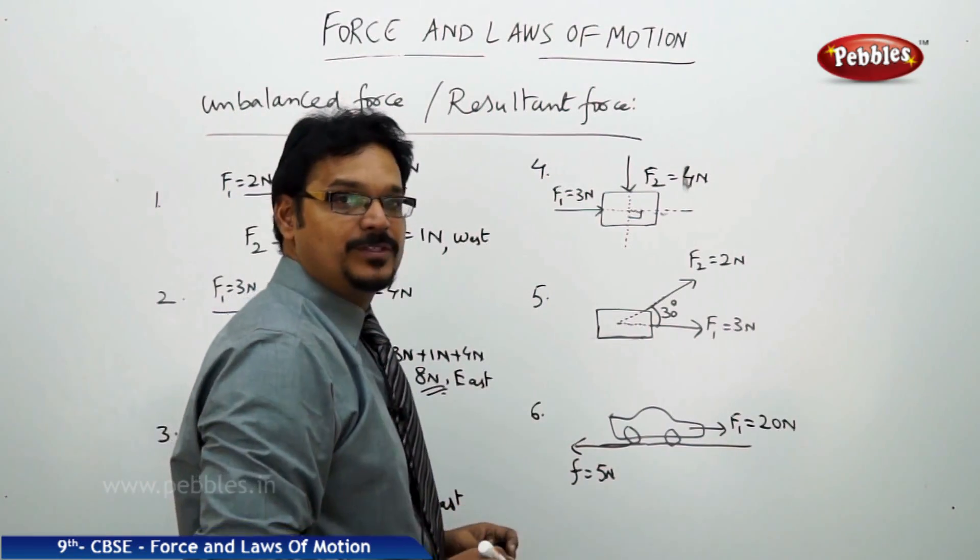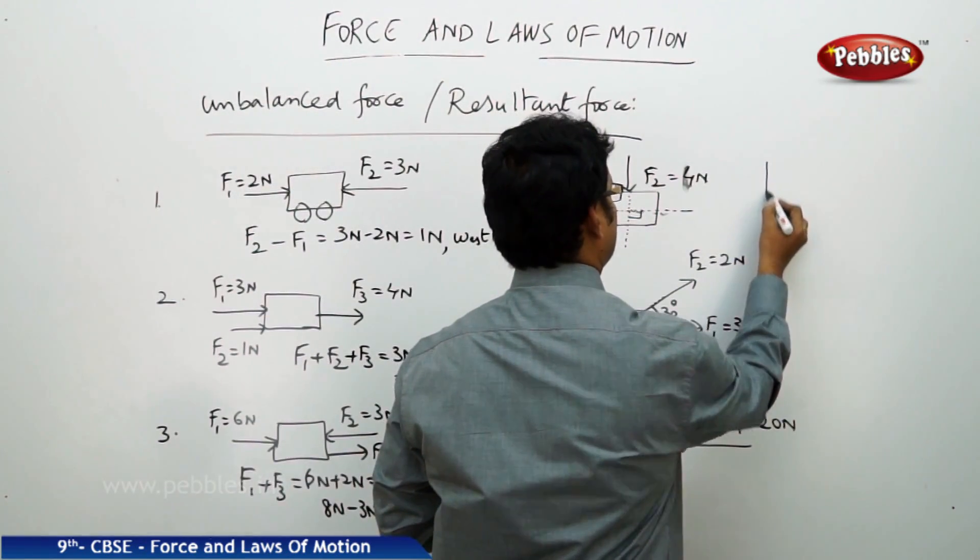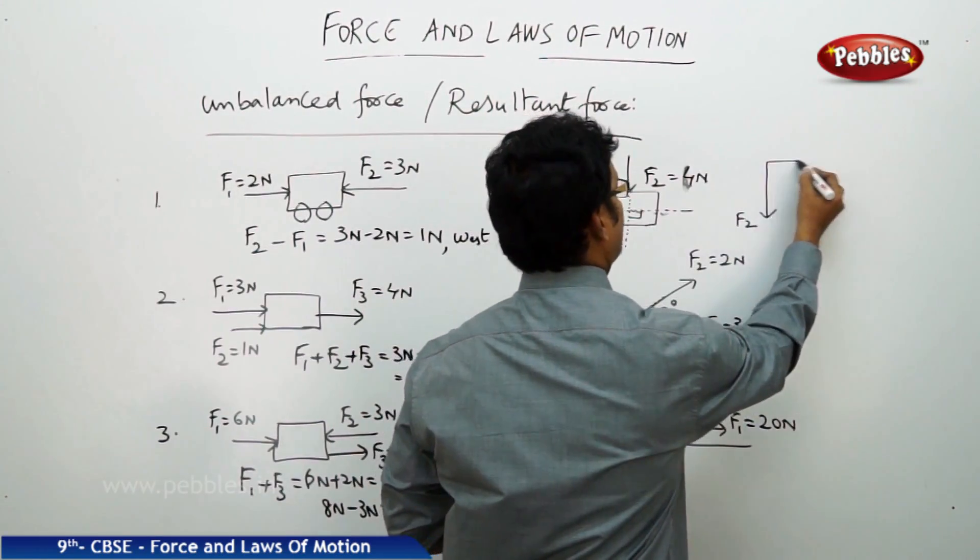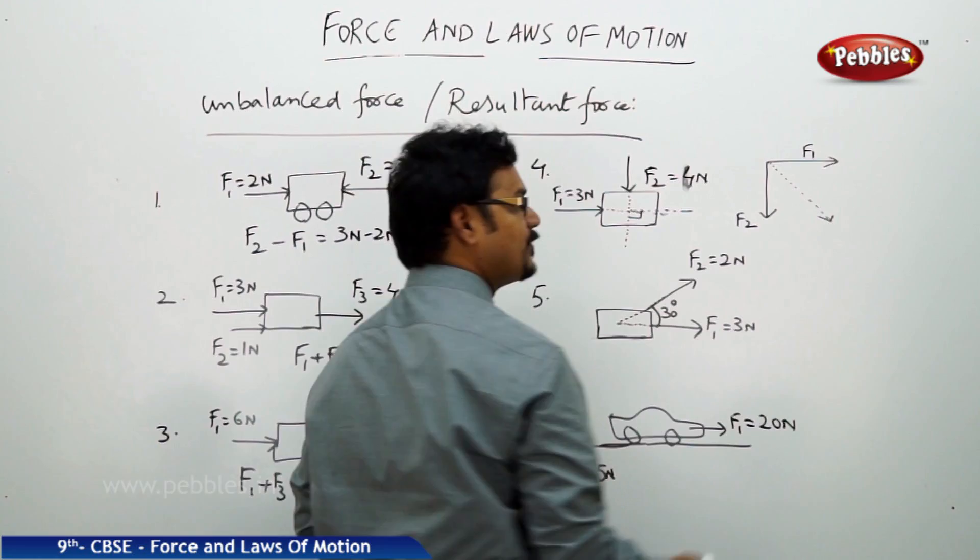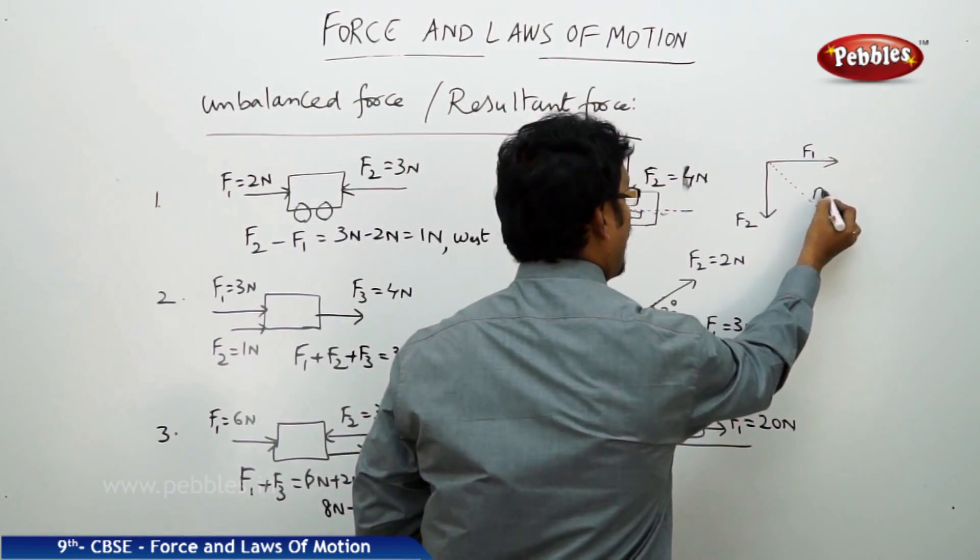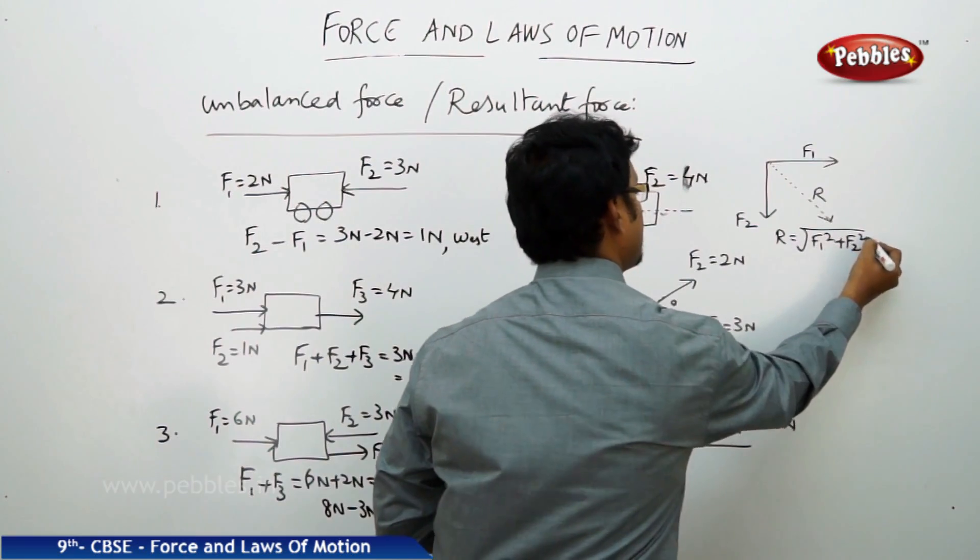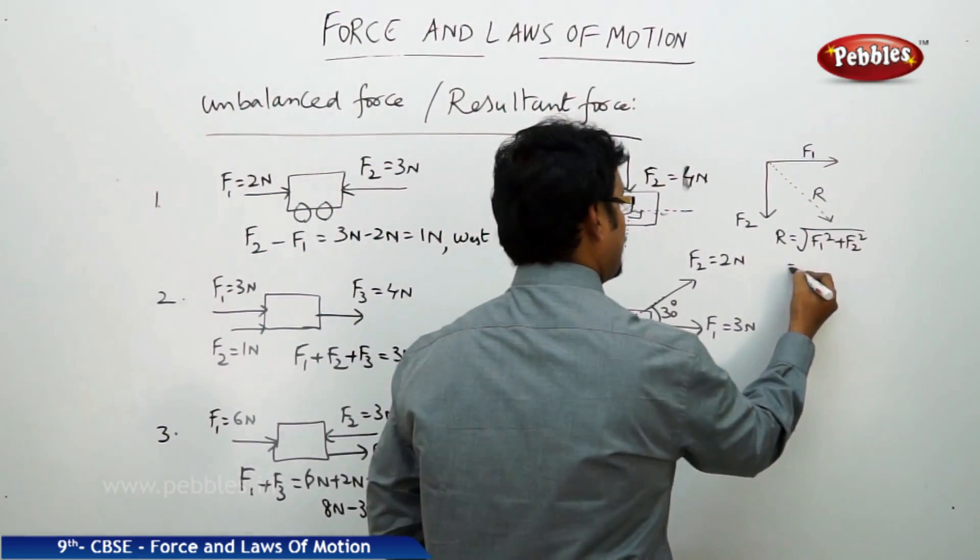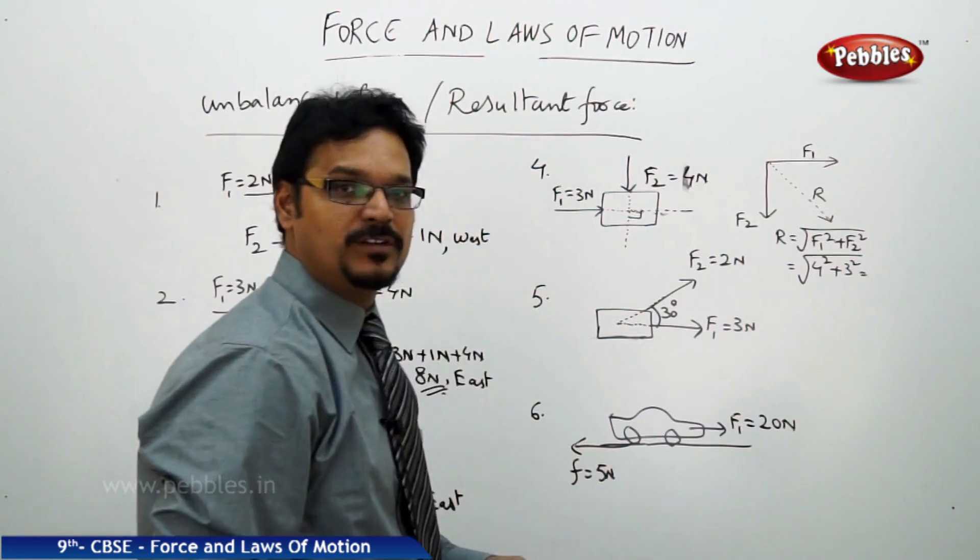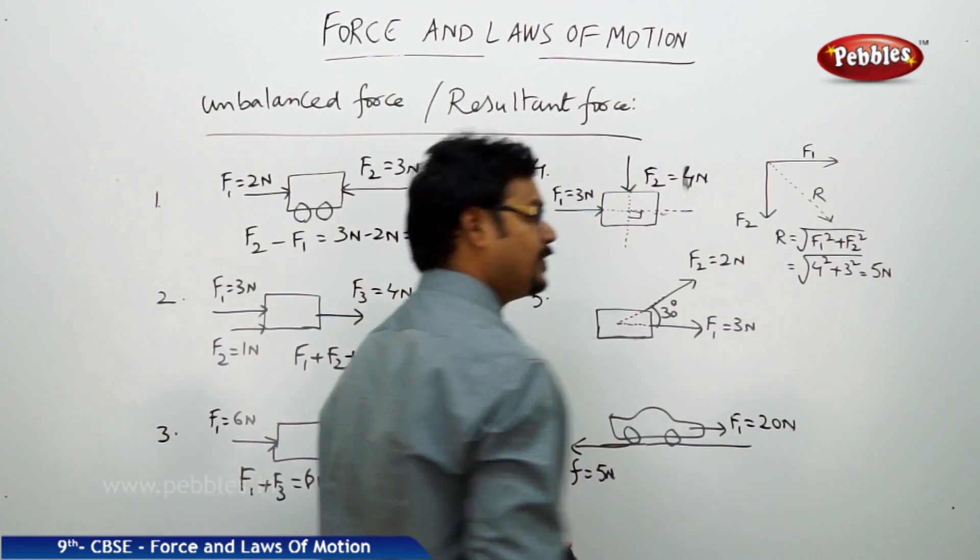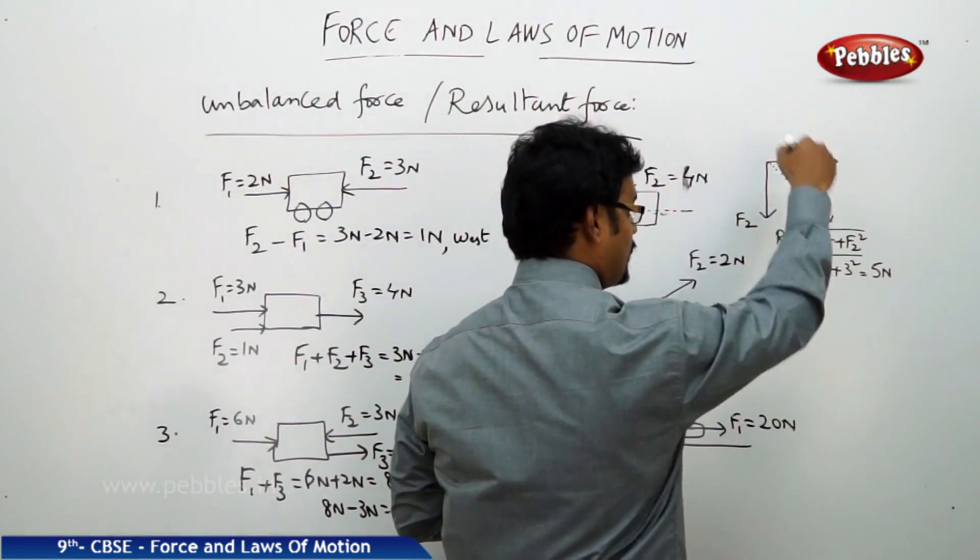Now how do you solve this numerical? When you have perpendicular forces you need to depend on Pythagorean theorem. See here, so this is F2 and this is F1. Now the resultant force always will be here, this is resultant force R. To find resultant force, R equals root over F1 square plus F2 square. So if you apply here, F1 square is 4 square, F2 square is 3 square, which is 16 plus 9 equals 25. Root 25 and root 25 answer is 5. 5 newtons is the resultant force and the direction is southeast.